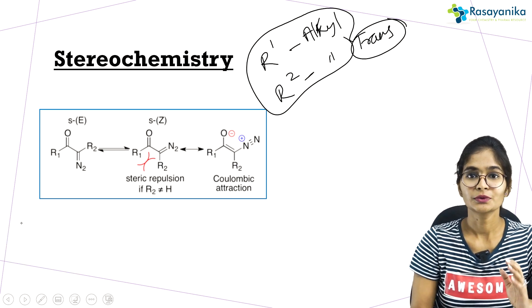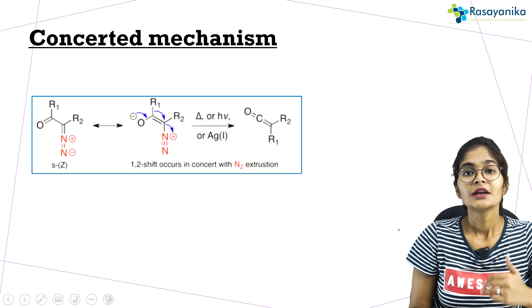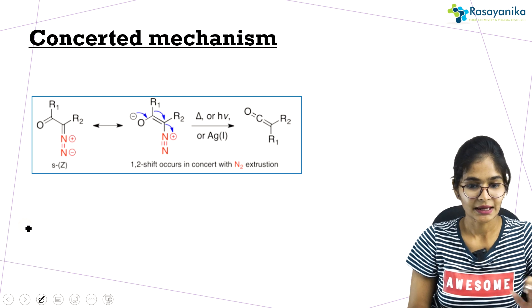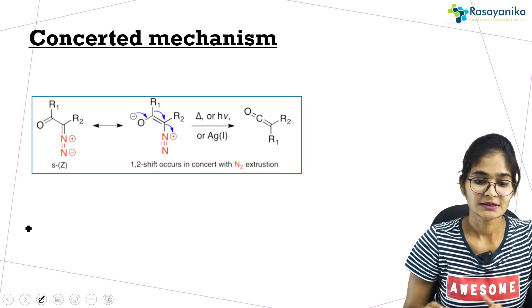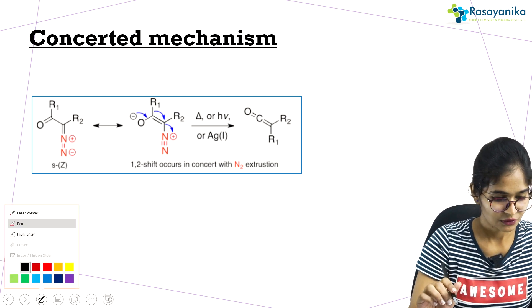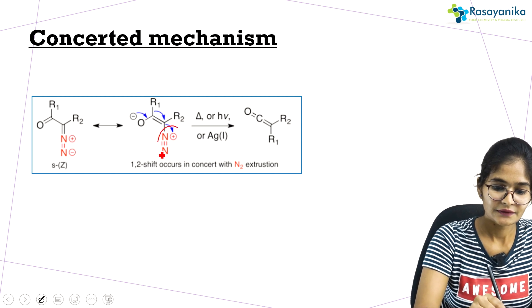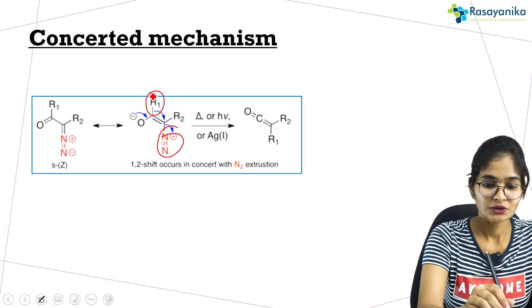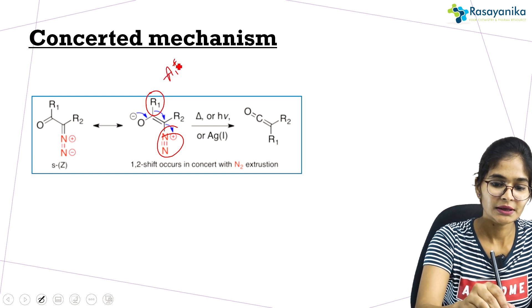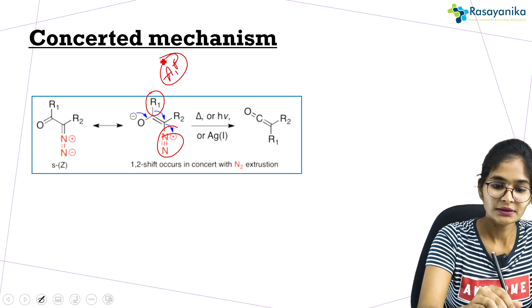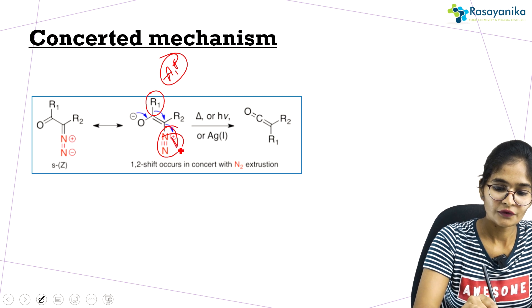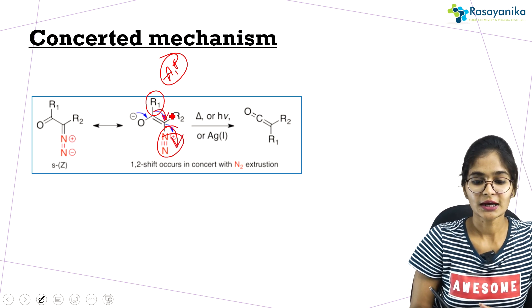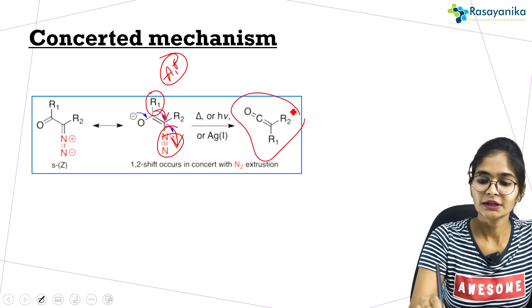In the concerted mechanism, as explained, the leaving group and migratory group are both anti-periplanar to each other. After removal of N₂ gas, the R₁ group migrates toward the electron-deficient carbon, giving the ketene. This is the concerted step.